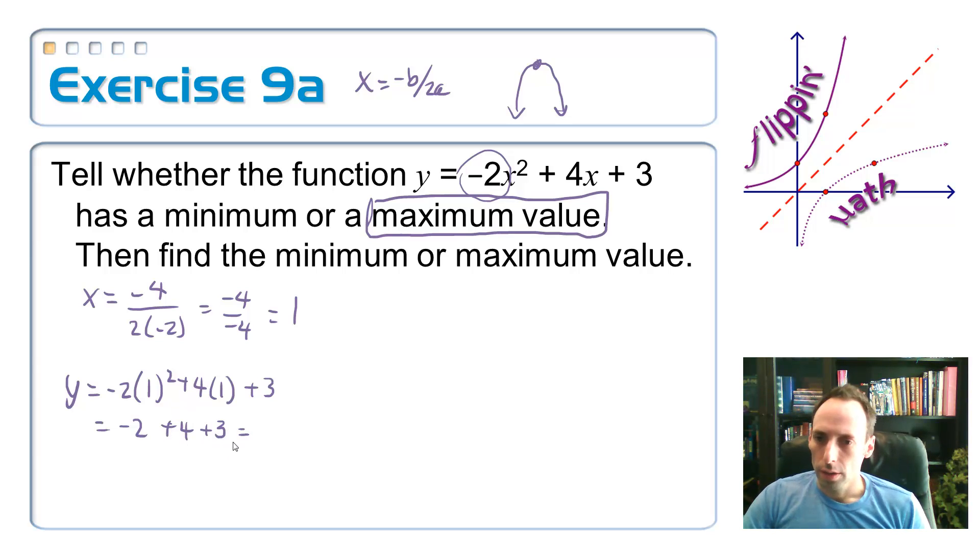plus my 4, plus my 3. Let's see, 7 minus 2, 5. There we go. So I have a maximum value at y = 5.